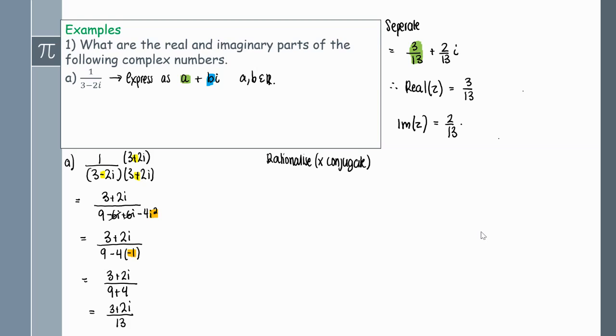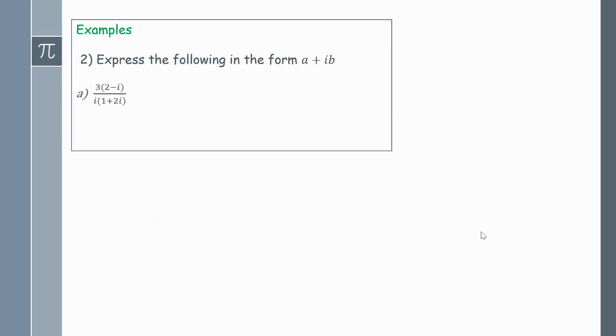The next question is similar, but this time we're going to express the following complex number in the form a + ib. We really want to get rid of everything on that denominator and just have a number on the denominator rather than anything complex. First let's expand. On the top I have 3 times 2 is 6 and 3 times minus i so minus 3i. On the denominator i times 1 is i, i times 2i is positive 2i squared.